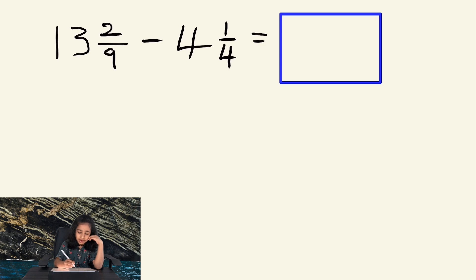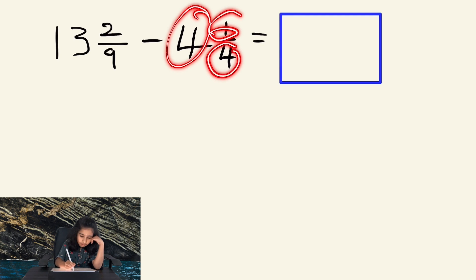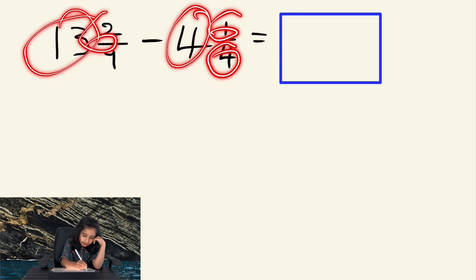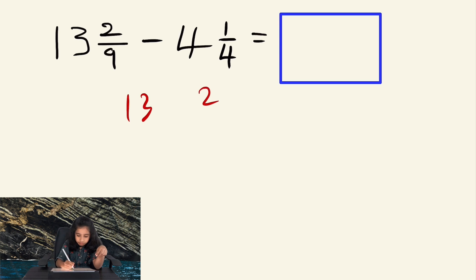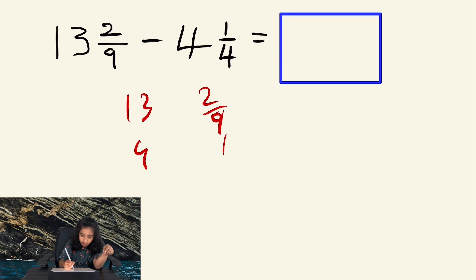I am going to subtract 4 and 1/4 from 13 and 2/9. Let me write them down as follows — 13 and 2/9 at the top and 4 and 1/4 at the bottom. And let me subtract.